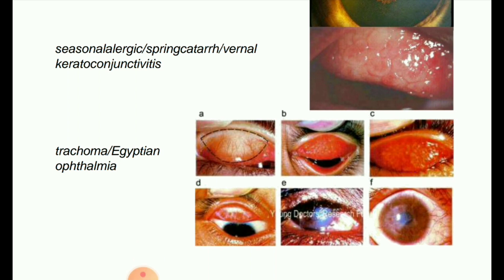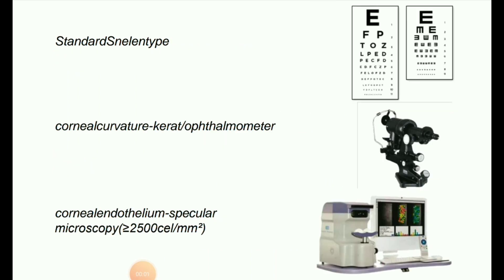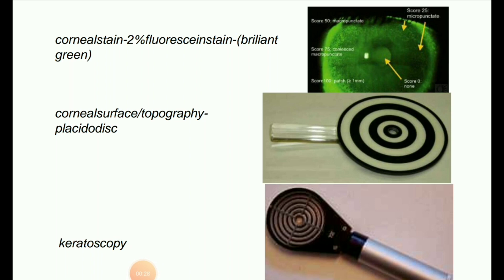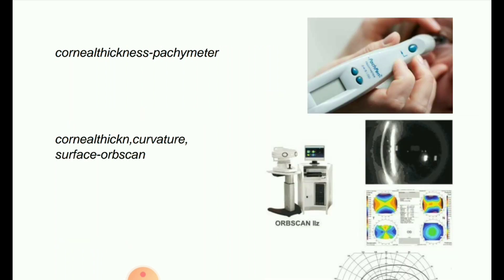Next image: standard Snellen type, corneal curvature ophthalmometer. Next image: corneal endothelium specular microscopy — you can see the instrument images. Next image: corneal stain — two percent fluorescein stain and brilliant green. Corneal surface topography using the Placido disc, also known as keratoscopy.